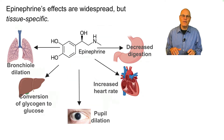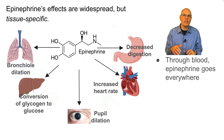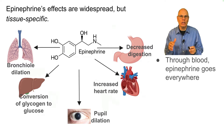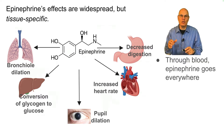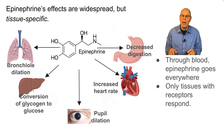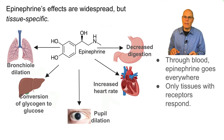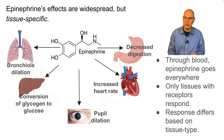Note that epinephrine's effects are widespread but tissue-specific. Epinephrine gets released from the adrenal glands into the bloodstream and goes everywhere — it will touch every cell in your body — but only tissues with receptors are going to respond, and that response will differ based on tissue types.